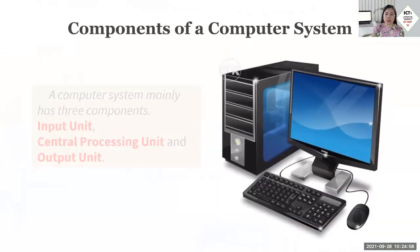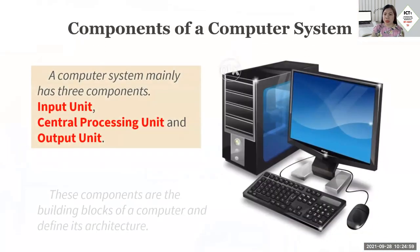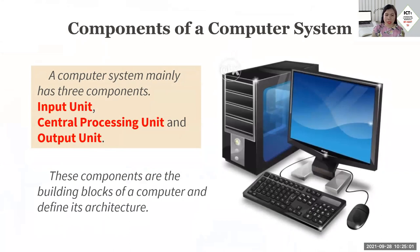A computer system mainly has three components: the input unit, the central processing unit, and the output unit. These components are the building blocks of a computer and define its structure.